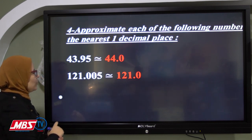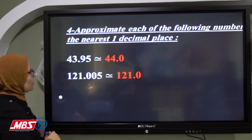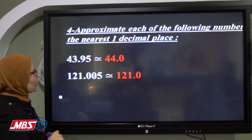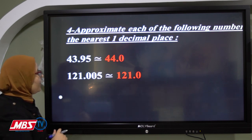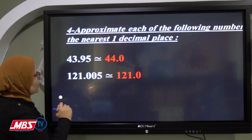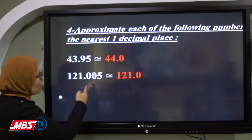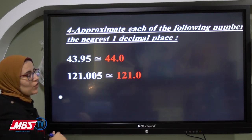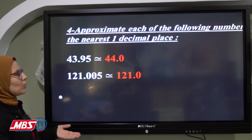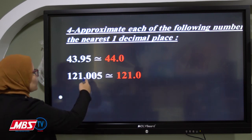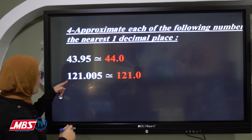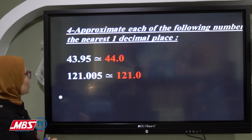For 121.005: in the tenth place we have 0 and in the hundredths we also have 0. Zero is poor, so both remain zero. The result is 121.0, written as 121.